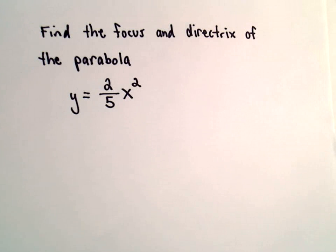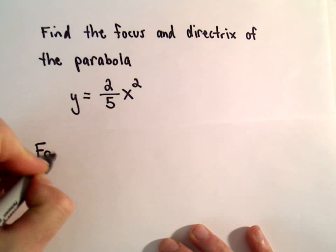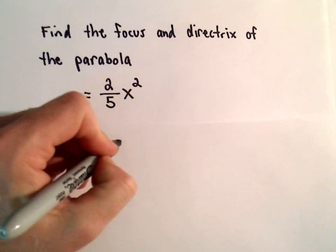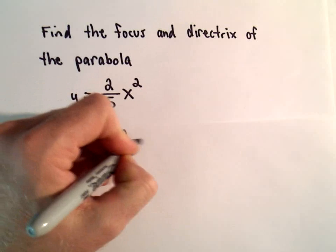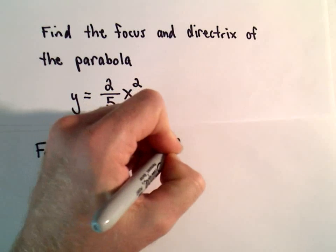So the way I'm going to approach this problem is, we want to write this equation in a certain form. I'm going to try to write it in the form x squared equals four times p times y.